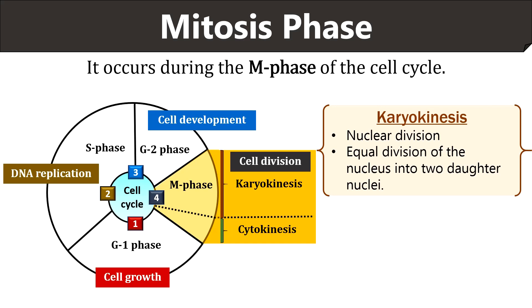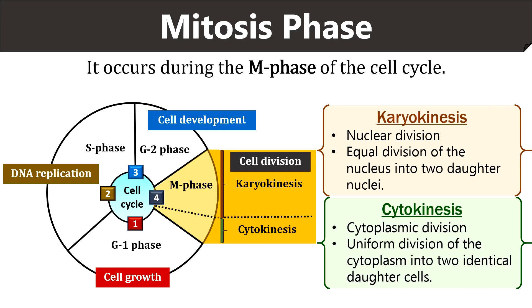Karyokinesis generally involves four sequential stages — prophase, metaphase, anaphase, and telophase. In cytokinesis, the cell itself divides into two daughter cells by the separation of cytoplasm. In animal cells, cytokinesis occurs via formation of a cleavage furrow in the plasma membrane, whereas in plant cells, cytokinesis occurs through cell plate formation at the center of the cell.